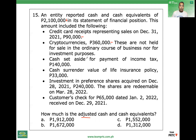Cash set aside for payment of income tax — that's okay, properly included, no adjustment. Cash surrender value of a life insurance policy — that is a non-current investment, so it was erroneously included. Minus.